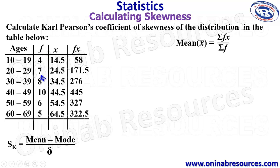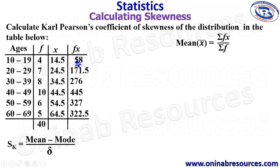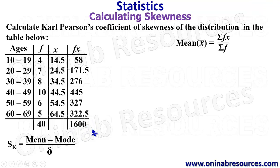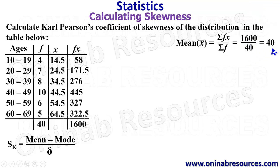For column f: 4 plus 7 plus 8 plus 10 plus 6 plus 5 gives 40. We then go ahead to sum fx: 58 plus 171.5 plus 276 plus 445 plus 327 plus 322.5 gives 1600. We then substitute into the mean formula: sigma fx is 1600, divided by sigma f which is 40. 1600 divided by 40 gives 40, which represents the mean of this distribution.